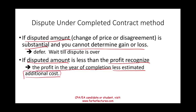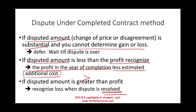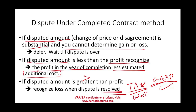If the disputed amount is less than the profit recognized — meaning even if the other party wins you still have a profit — you record the profit in the year of completion, reduced by estimated additional costs. If the disputed cost is greater than the profit and would wipe it out entirely, you recognize the loss when the dispute is resolved. Under GAAP, a loss is recognized immediately as soon as it's anticipated, but under tax, you wait — the government doesn't want you claiming the deduction until later.